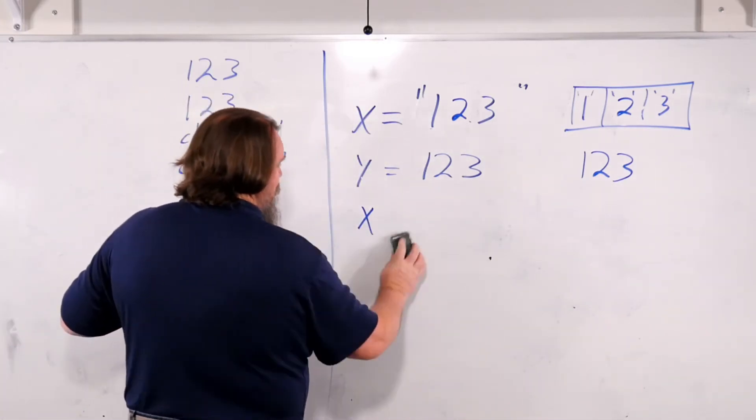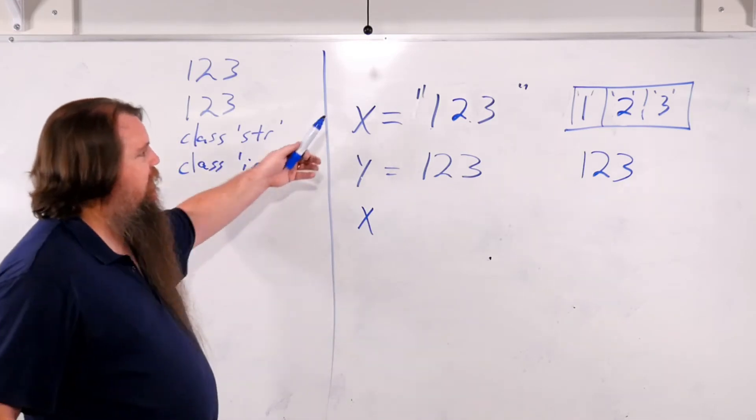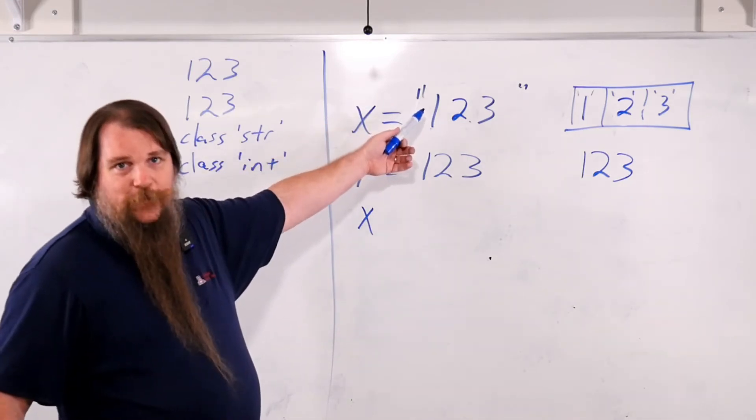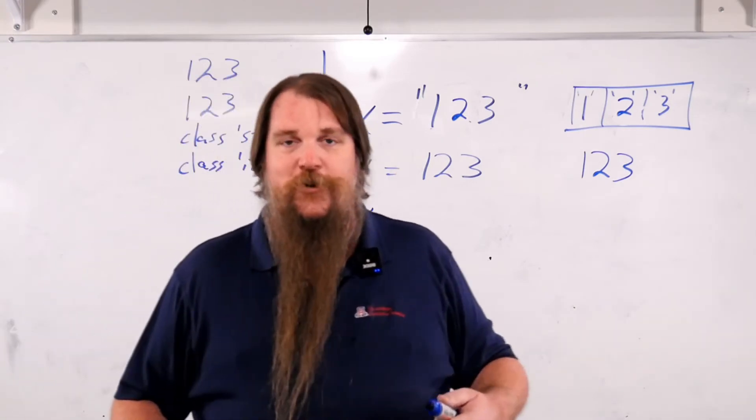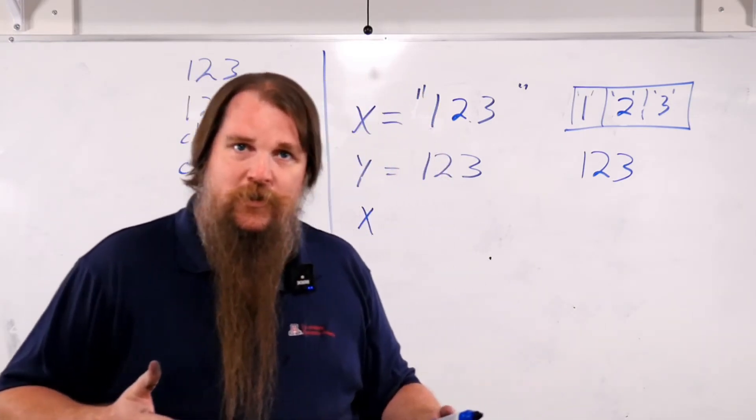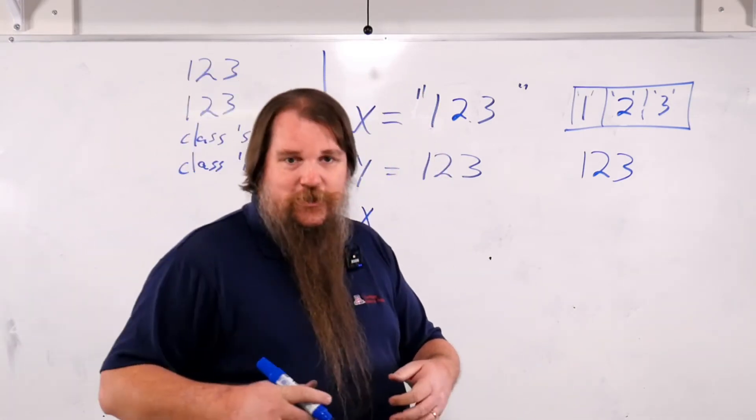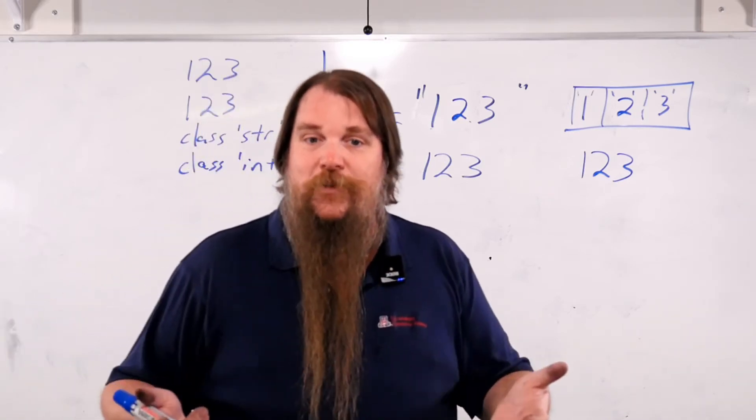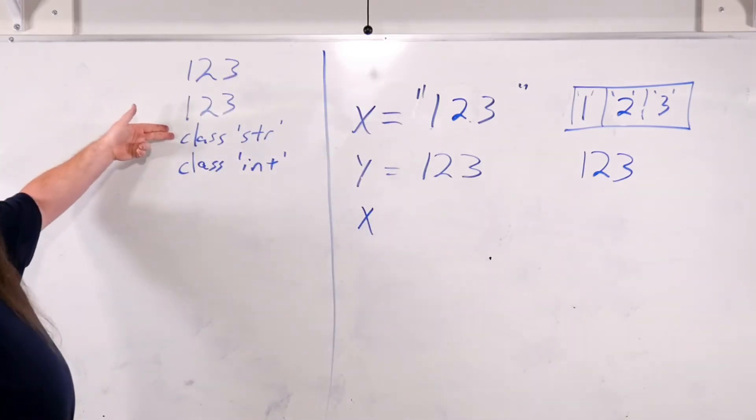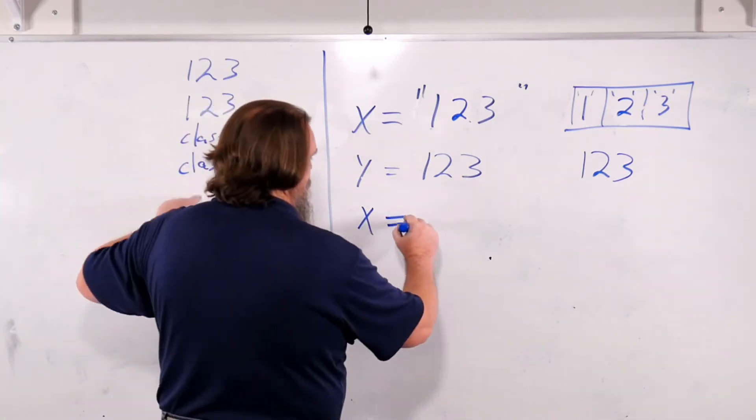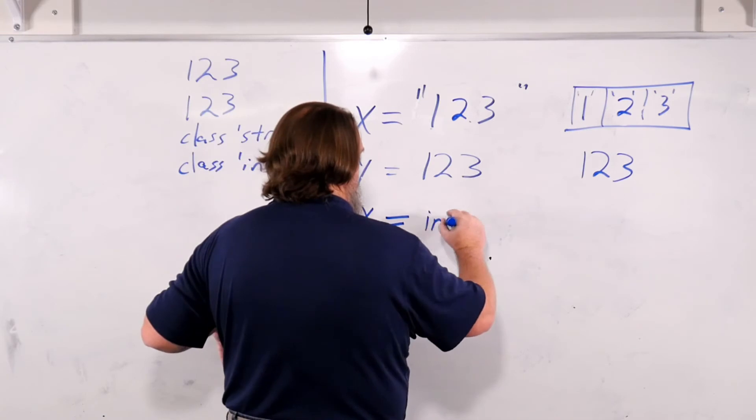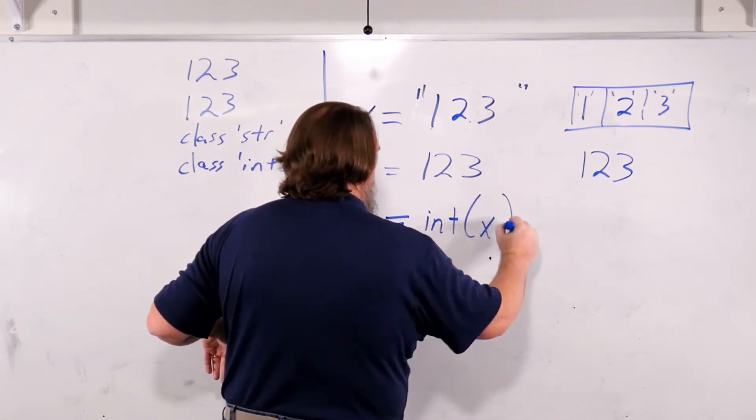So what we need to do first is to convert this string into an integer. And Python has a nice convention that says if you want to convert from one type to another, usually the thing you're going to do is call a function with that name. We have a string. We want to make it an integer. So we could say int of x.